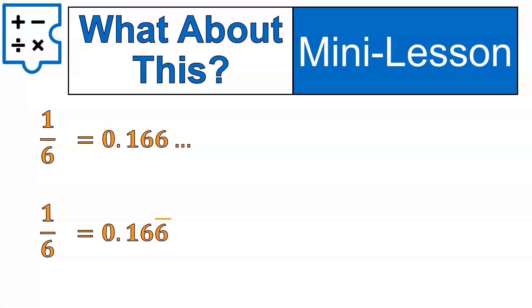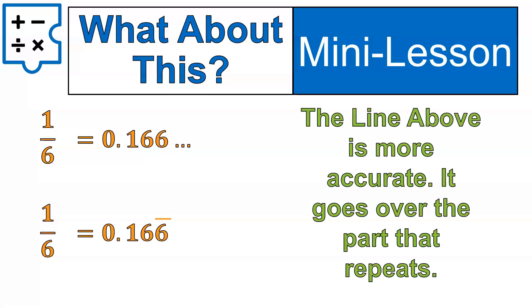First off, the dot, dot, dot, and the line, what they mean is that those numbers are repeating. Now, like I said, I was going to tell you the one that I prefer. I prefer having the line above, and the reason why I prefer the line above is because it tells you which part is repeating.